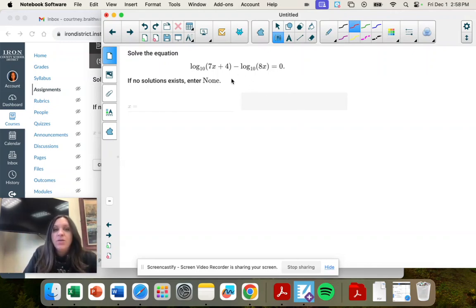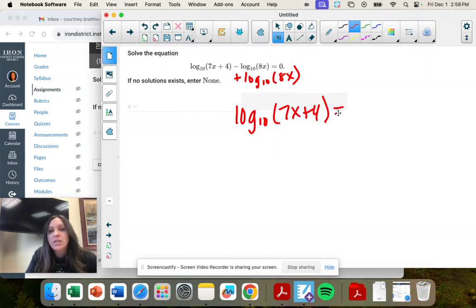So we have equal zero. I'm going to add this log to the other side. So I have log base 10 of 7x plus 4 equals log base 10 of 8x.